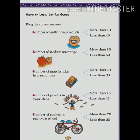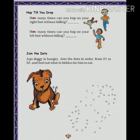The same way, the number of matchsticks — is it more than 30 or less than 30? It will be more than 30 in each matchbox. The same way, the number of pencils in your class depends on the number of students. So if there are 45 children it will be more than 45, or if it is less than 45 then it will be less than 45. The same way, the number of spokes in one cycle — is it more than 20 or less than 20? In this video you can see there are less than 20 spokes in one cycle. It depends on your ability or fitness of your body how many times you can jump — either 5 jumps or 10 jumps.